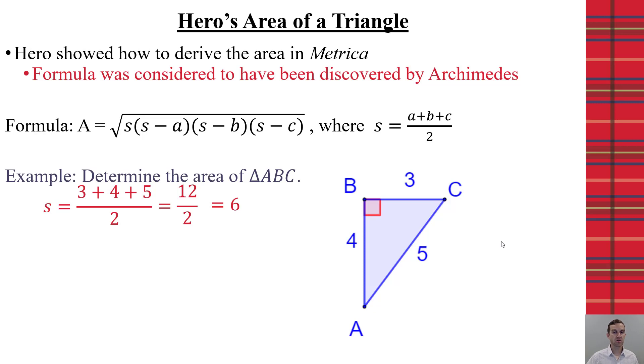Now, we're going to use the 6 and then plug it into Hiro's formula. So, 6 times 6 minus 4 times 6 minus 3 times 6 minus 5, that will give us 6 times 2 times 3 times 1, which is the square root of 36, which is 6. And if I think about how we calculate the area, one-half the base and the height where we've got the perpendicular, we have 3 times 4 is 12, 12 divided by 2 is 6.